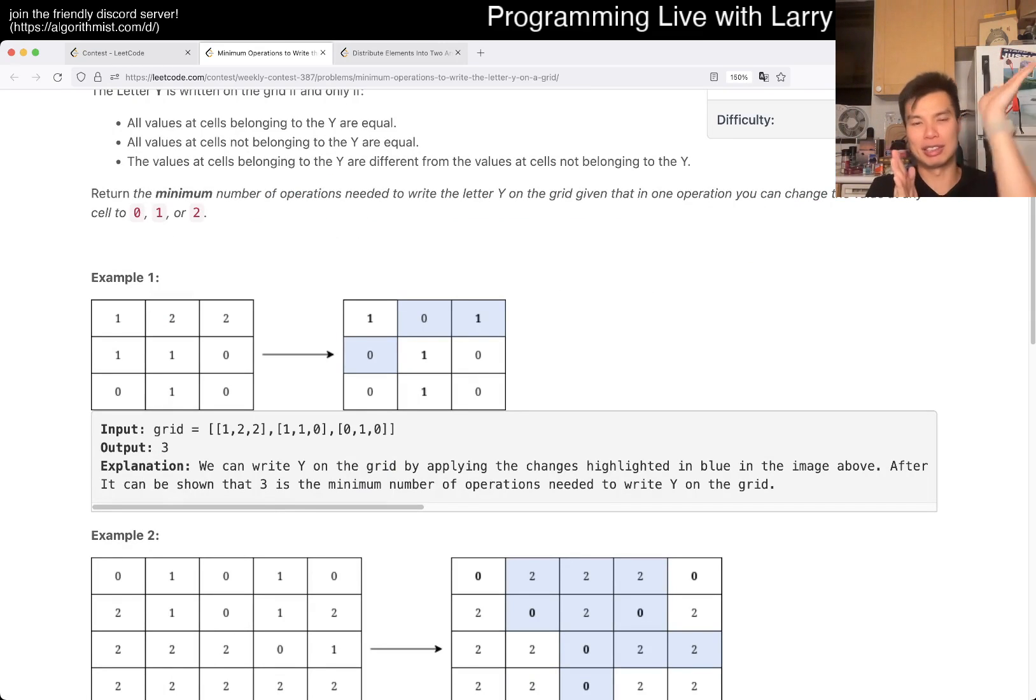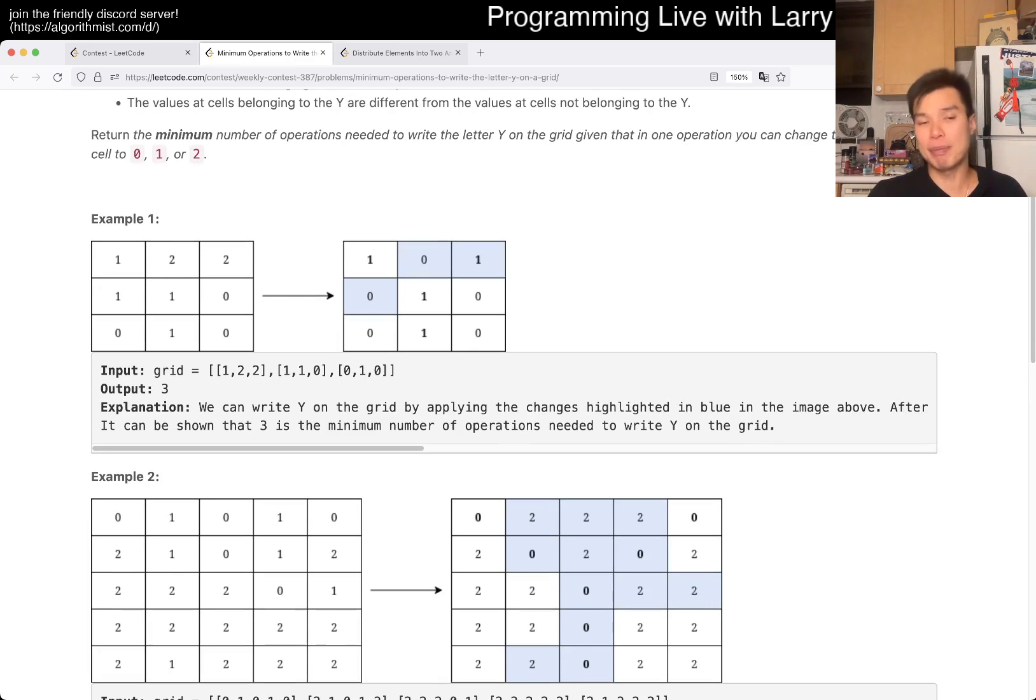Because N is odd, you just have to find the middle point. One of the diagonals is I equals J, and the other diagonal is I equals N minus J minus 1. And then the vertical is just obviously the column is going to be N over 2, and that's it.